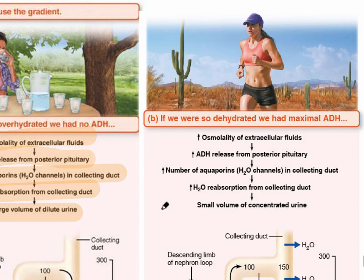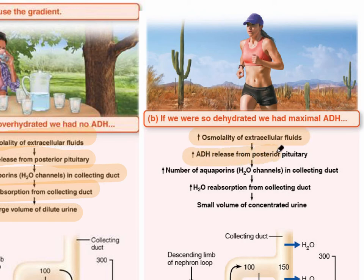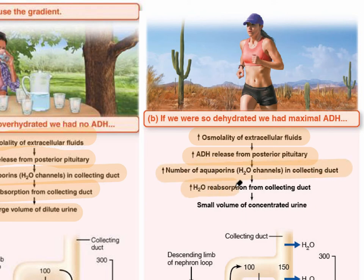At the opposite extreme, if we're dehydrated, we need a maximal amount of ADH because we're losing lots of water through sweat. We need lots of water to be reabsorbed into our blood vessels. The high osmolarity of extracellular fluids leads to an increased release of ADH from the posterior pituitary gland, leading to an increase in aquaporins in the collecting duct to reabsorb more water, resulting in a small volume of concentrated urine.